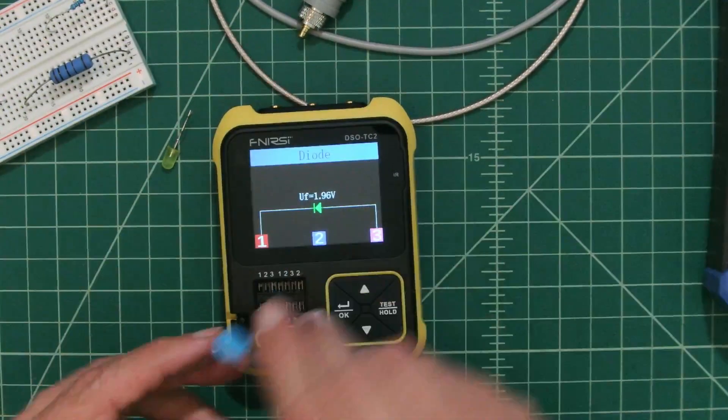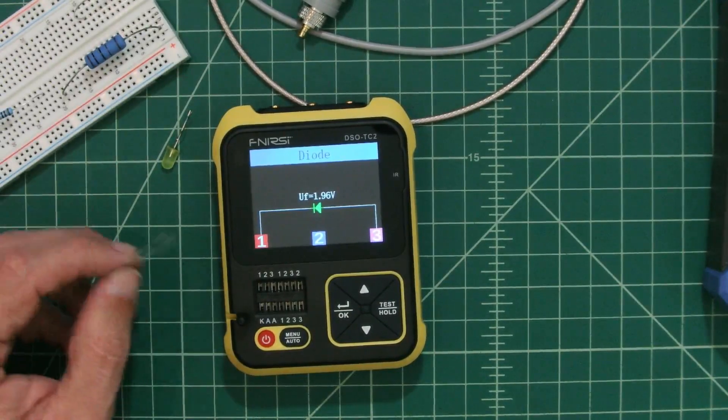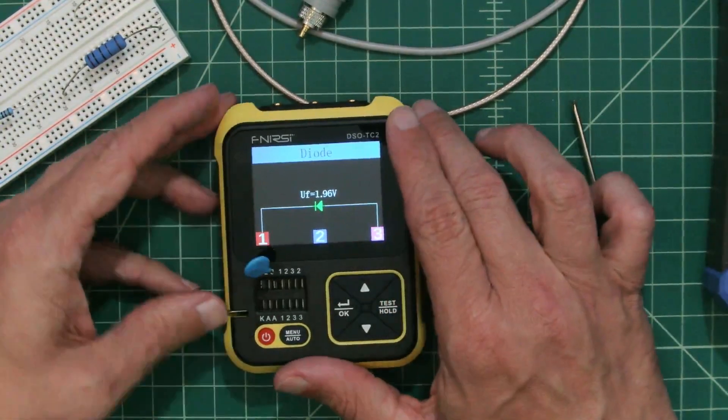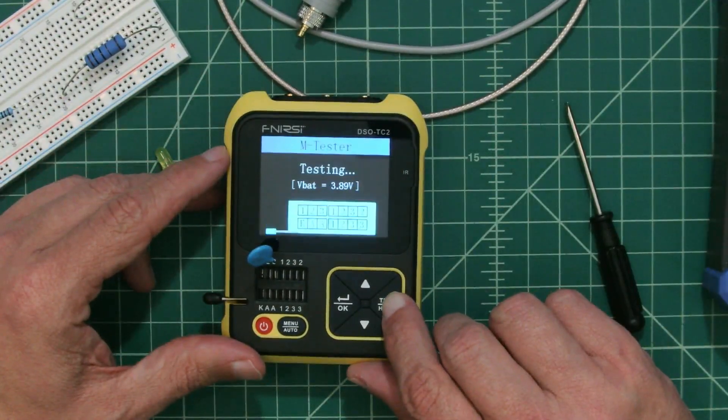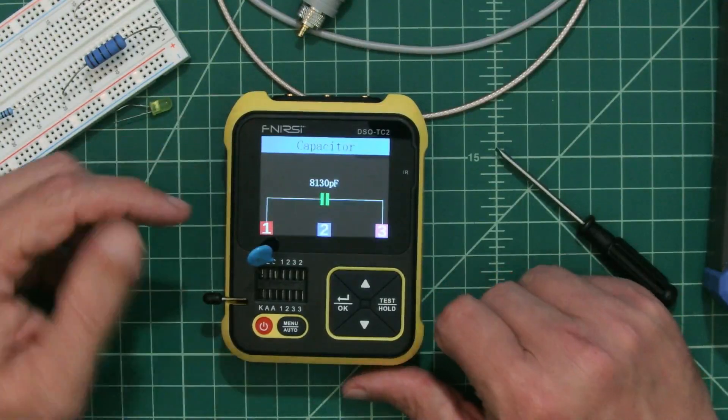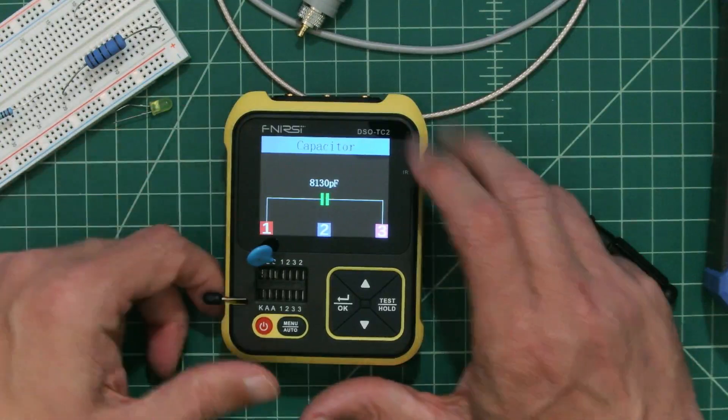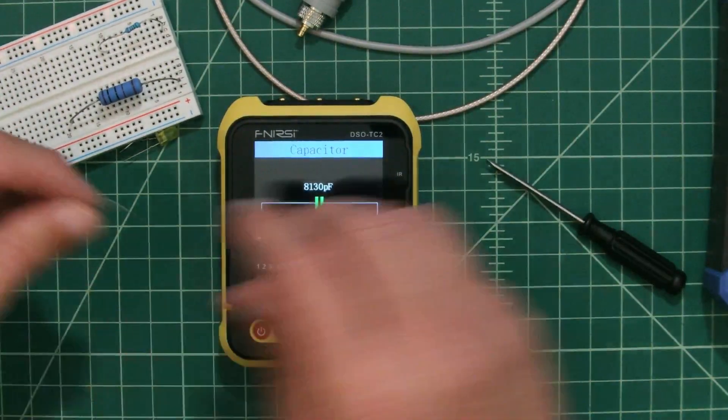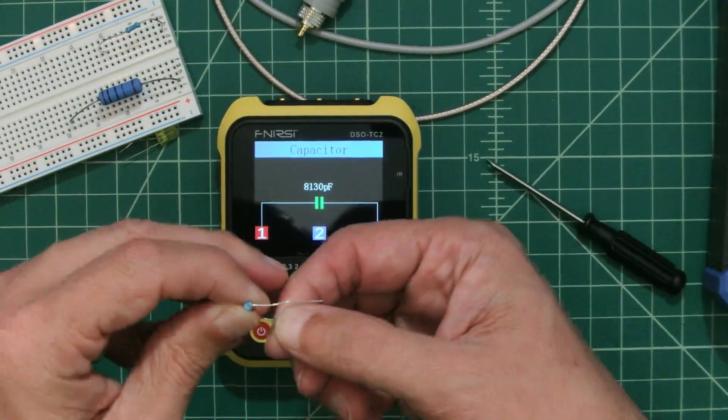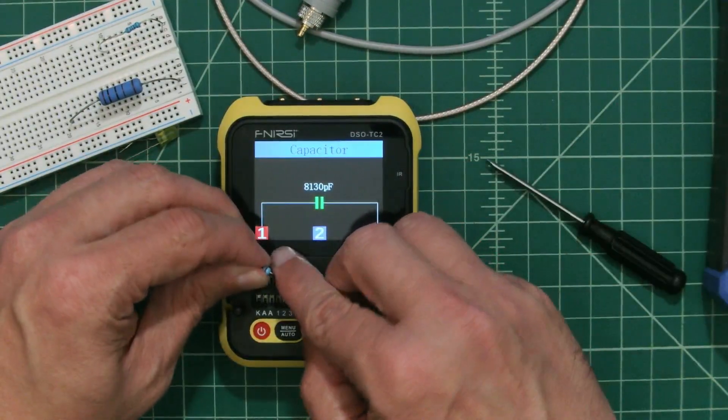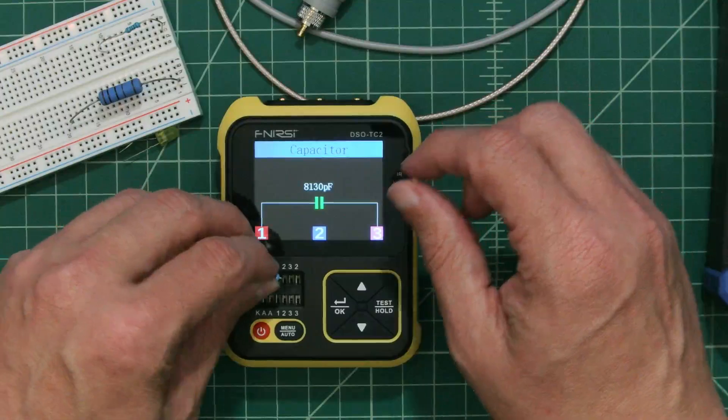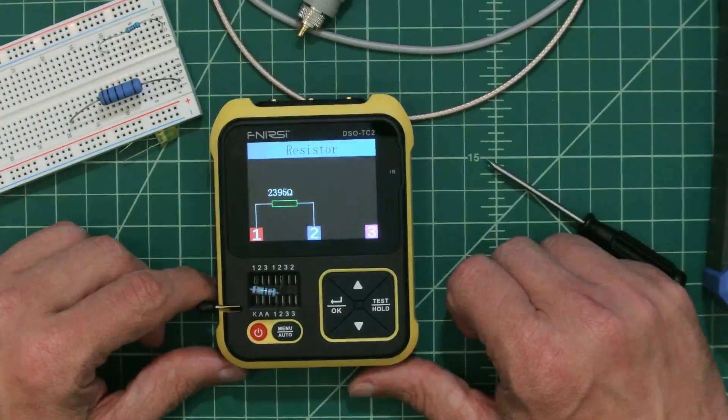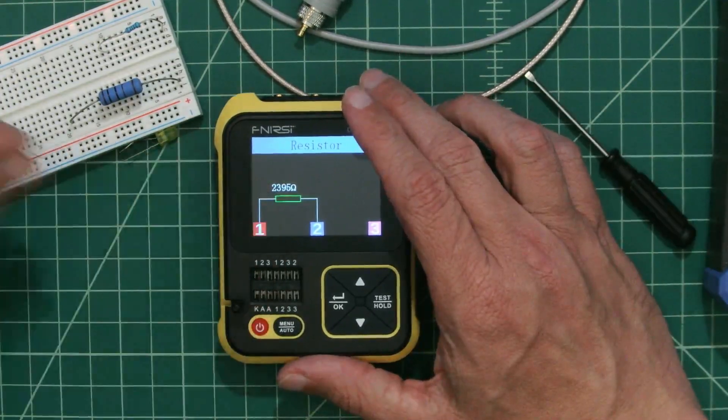Here we have a big old capacitor, and I'm not sure what the value is on this thing. But this is where I think this device is going to shine and become pretty handy for me is that I'll be able to just stick stuff in here and test it out. And here we go. It's an 8,130 pF capacitor. Coolness. Let's take that out. I don't know if it will do resistors or not, but there's only one way to find out. We're in 1 and 2, and it came back resistor, 2,395 ohms. So that's cool.